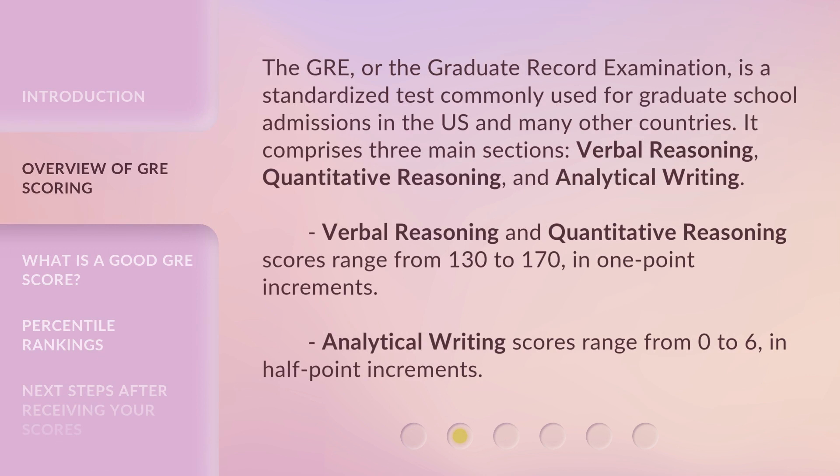The GRE, or the Graduate Record Examination, is a standardized test commonly used for graduate school admissions in the U.S. and many other countries. It comprises three main sections: verbal reasoning, quantitative reasoning, and analytical writing. Verbal reasoning and quantitative reasoning scores range from 130 to 170 in one-point increments. Analytical writing scores range from 0 to 6 in half-point increments.